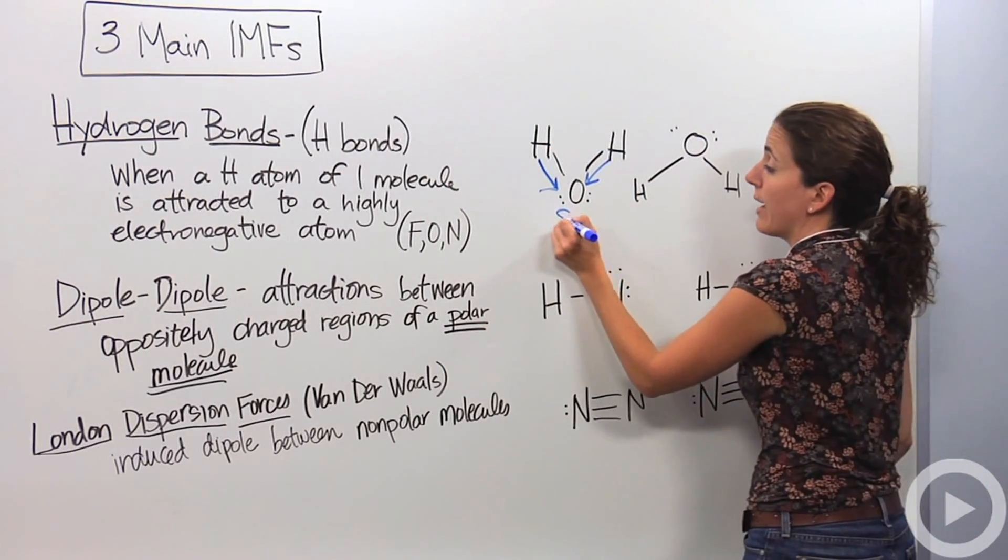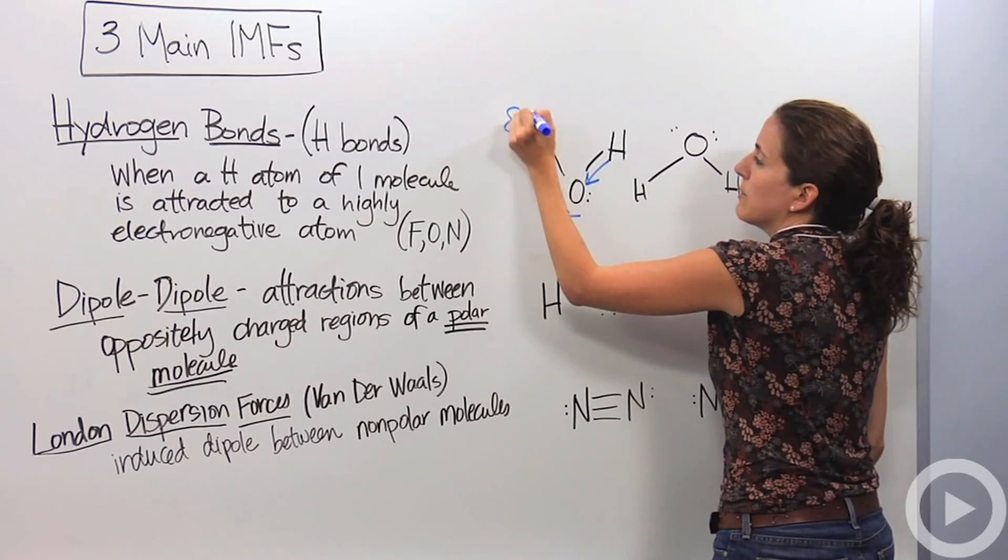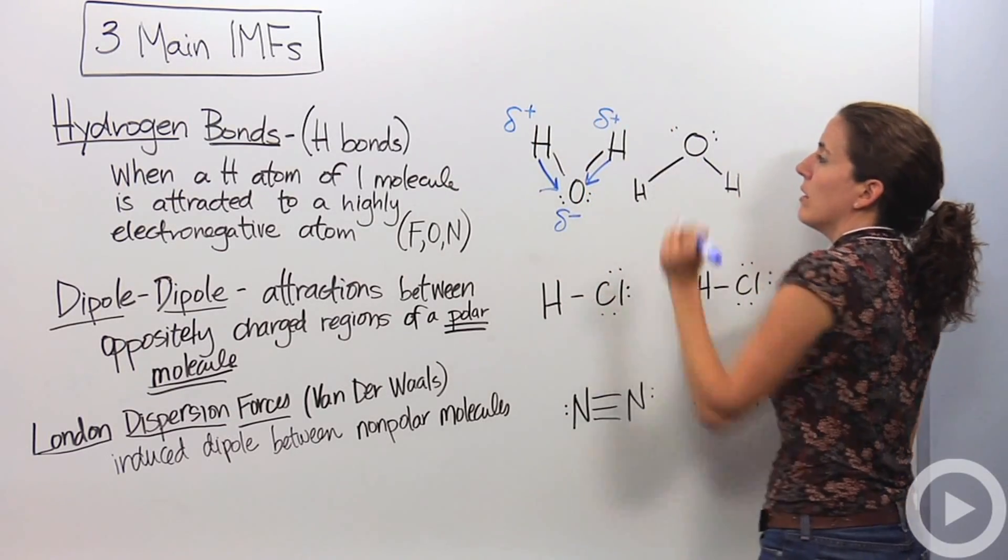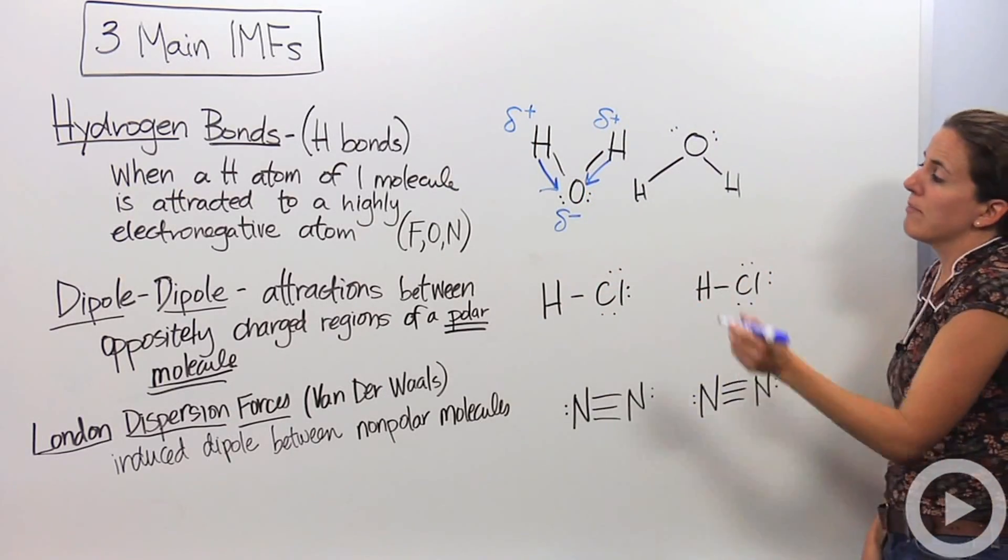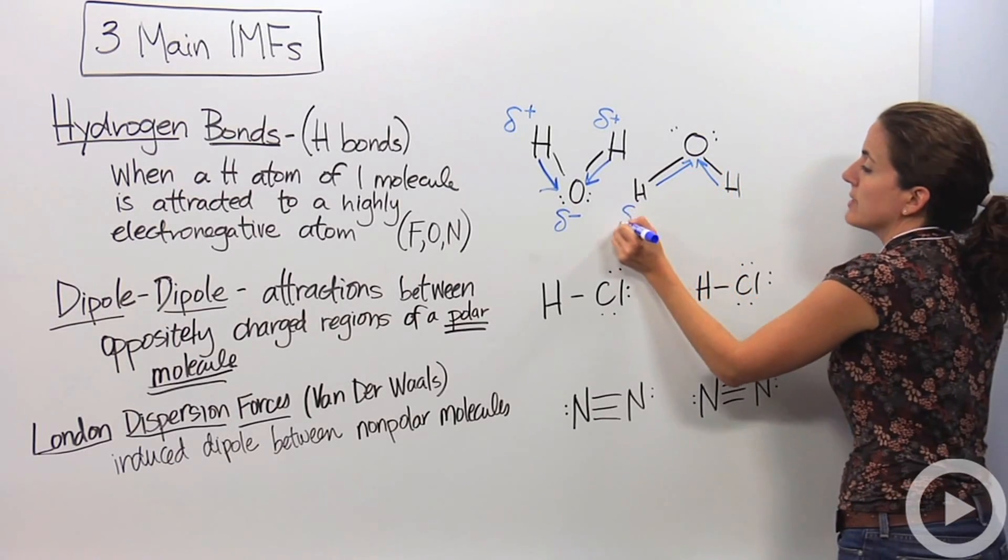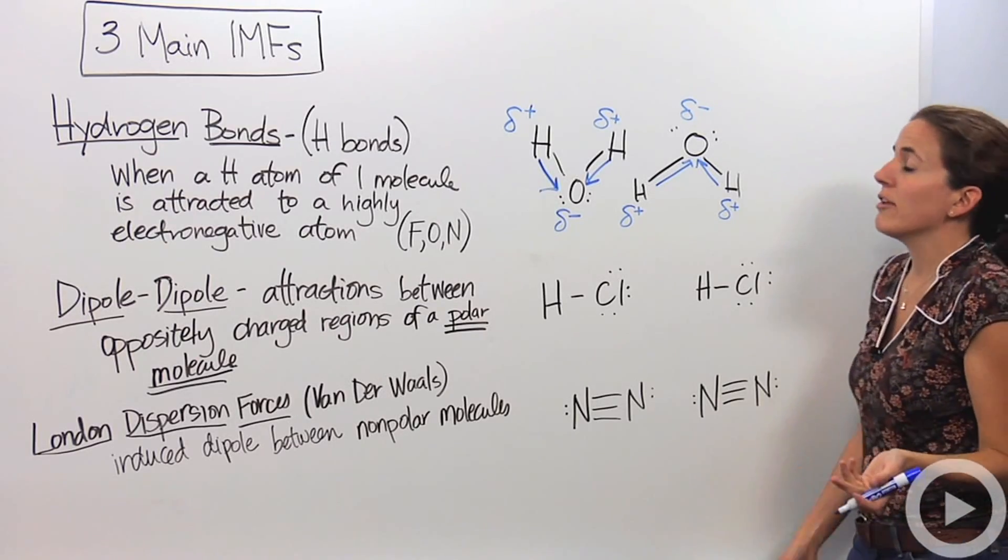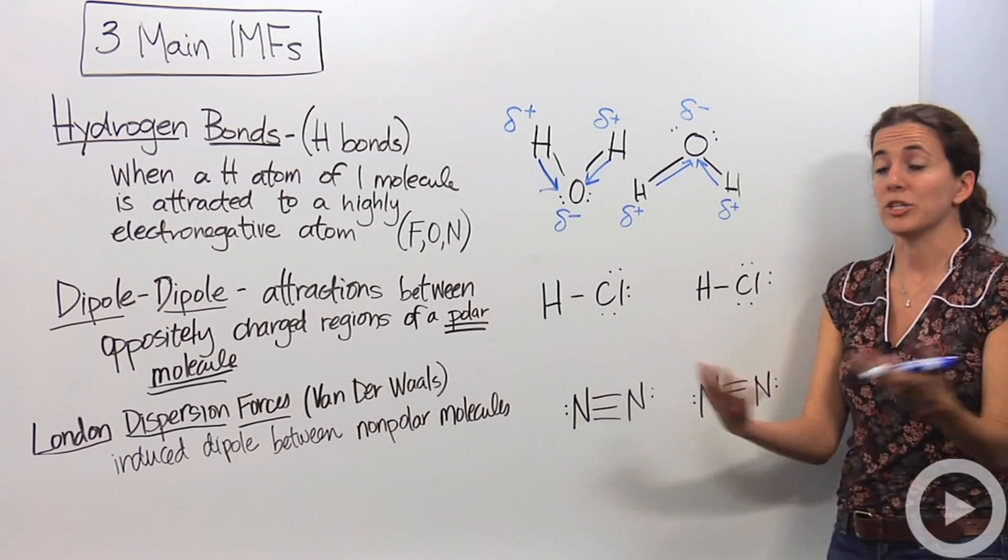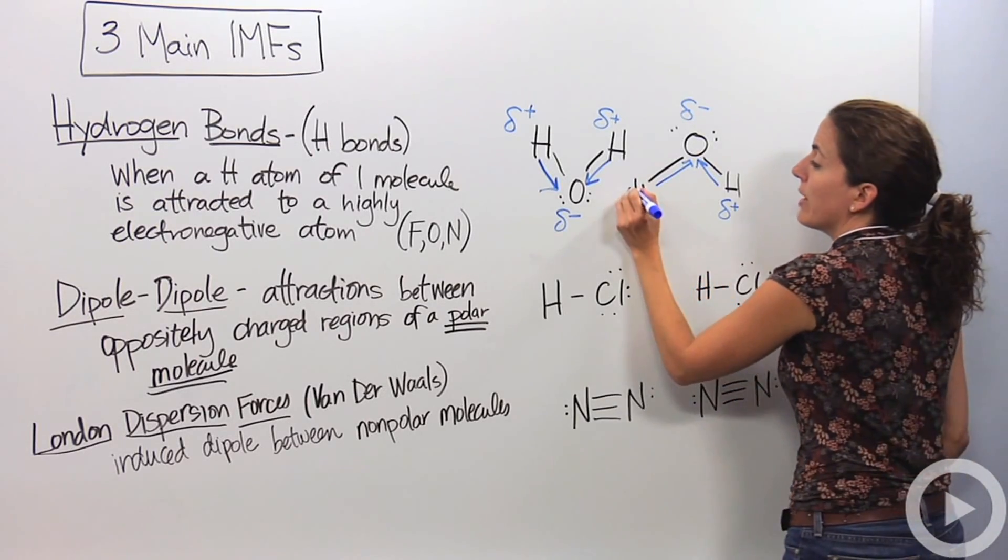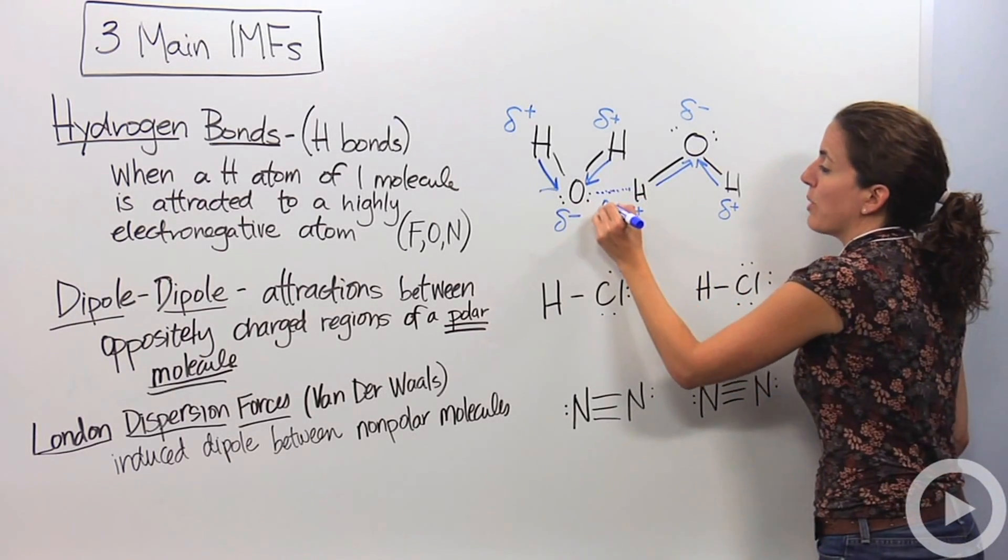So this is going to be slightly negative. We're going to denote that with a delta with a minus charge. And these guys are going to be slightly positive. Same goes for this guy. Electrons are going to flow towards the oxygen, making this slightly positive, and this slightly negative. And we know that negative charges and positive charges attract each other. So we're going to have a very strong attraction here. This is our H bond.